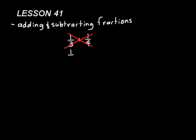If you had one-third plus two-thirds, you could add that together. The way you do that is you just add the two numbers in the numerator. One-third plus two-thirds is three-thirds. Now, just think about fractions — one-third, let's think about how much that would be. If we drew a circle out, that might be about one-third there.